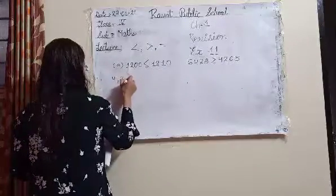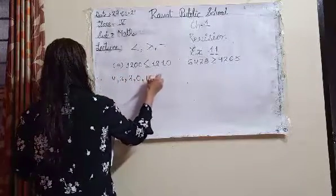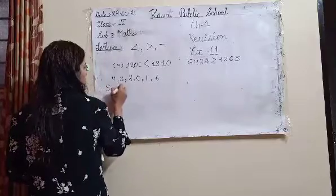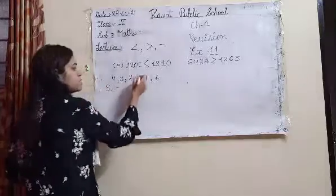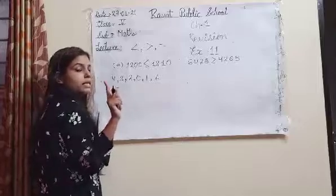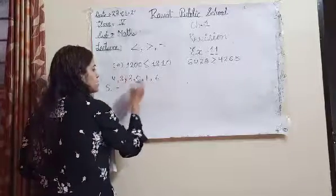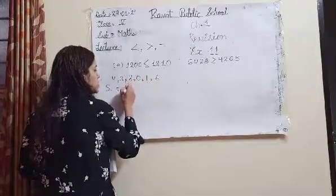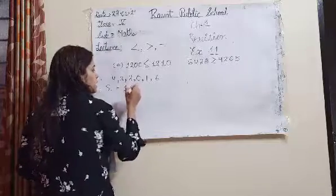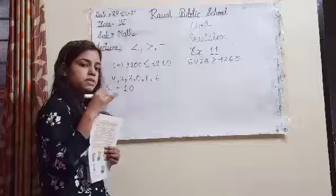Next question: write the smallest and the largest number. In question 2, the digits are 2, 0, 1, 6. The smallest number — note that starting with 0 is not allowed, so after 0 the next digit is 1. So the smallest number starts with 1.